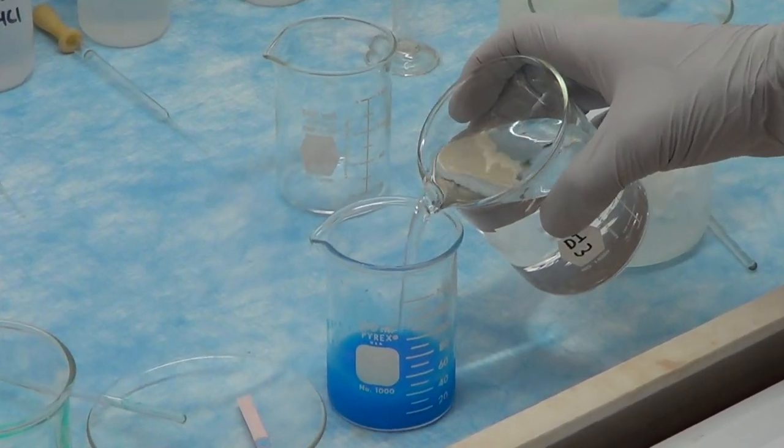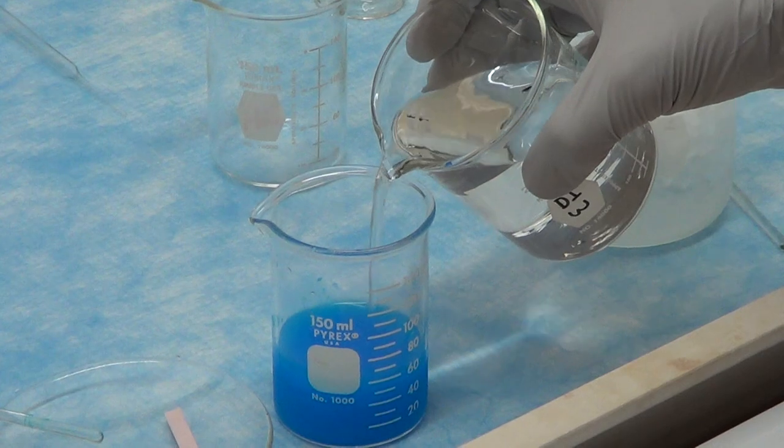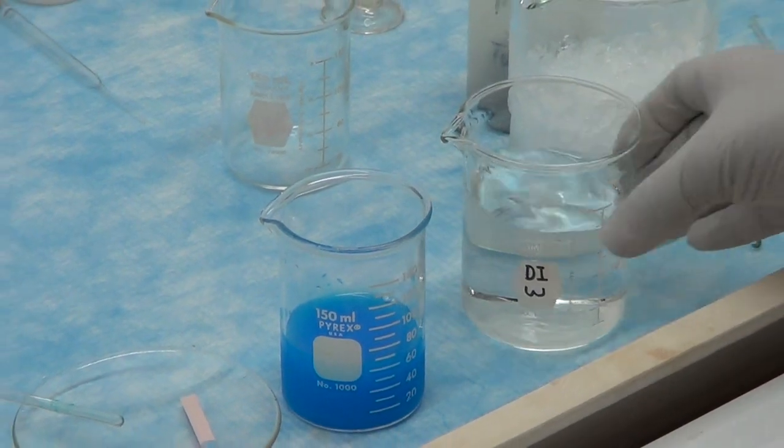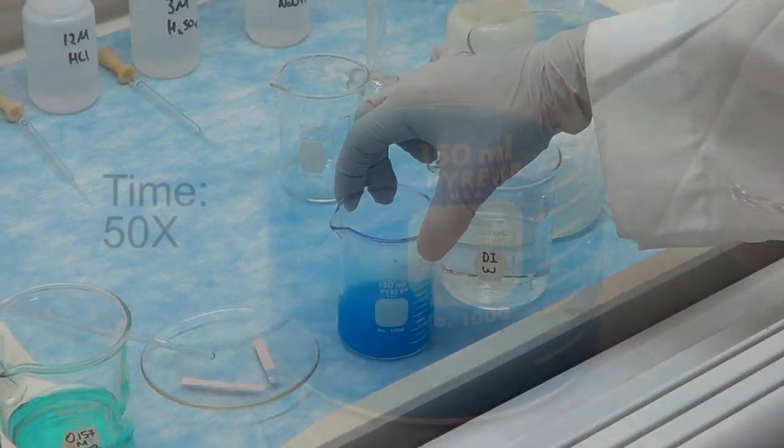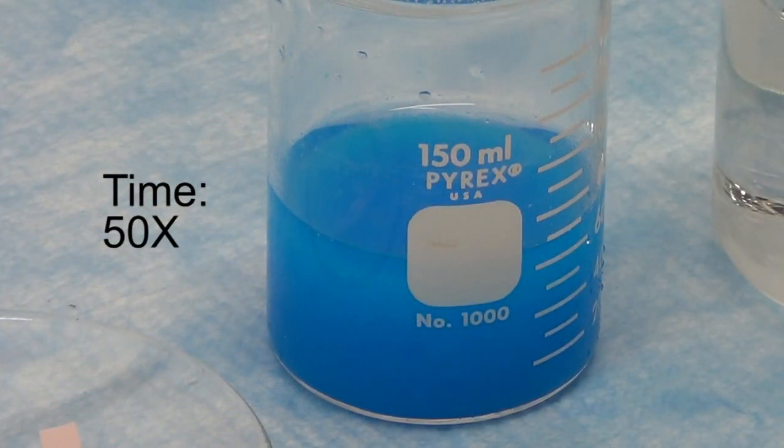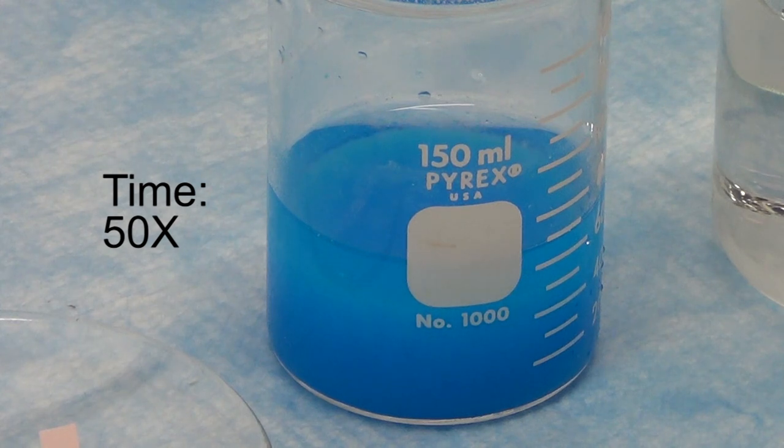Next we will wash the precipitate three times with 30 ml, 50 ml and again 50 ml of water. When we add the water to the beaker, we will stir the solution and allow the mixture to stand for few minutes while the precipitate settles.